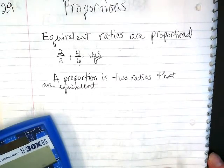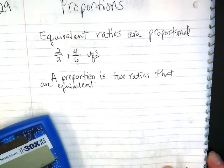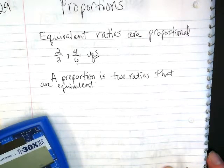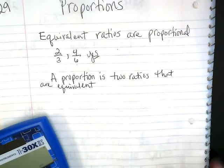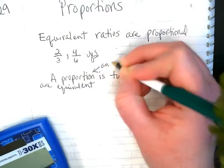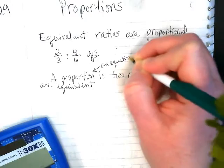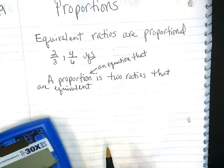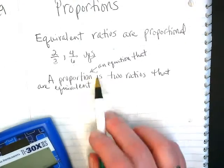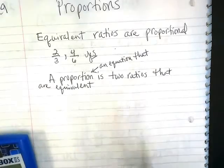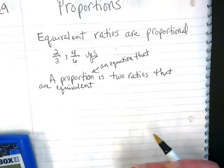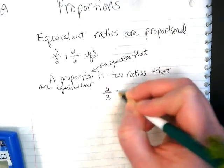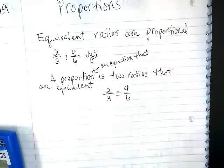There's a lot of math words in there. Sorry, correcting myself here. A proportion is an equation that is two ratios that are equivalent. So it has an equal sign because it's an equation. So let me go back to our example up above. I could write this as a proportion like this.